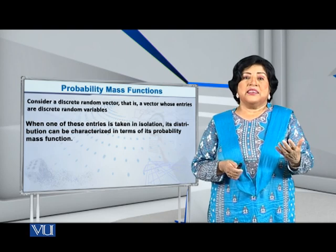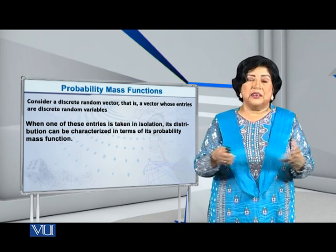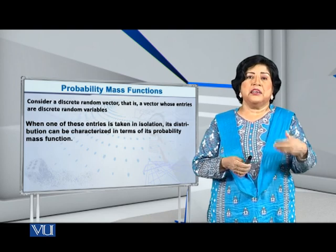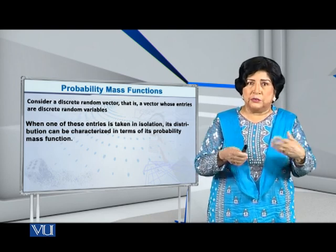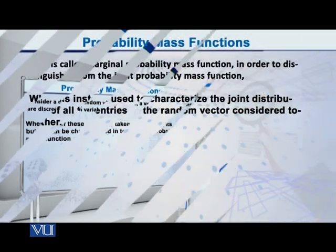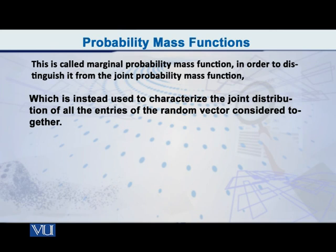When we have more than one random variable, the distribution we just considered—the one in isolation of the others—is called the marginal probability mass function.